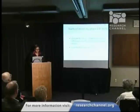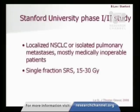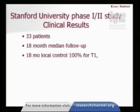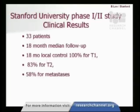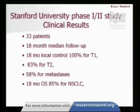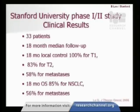We conducted a Phase 1-2 study looking at safety and efficacy in localized non-small cell lung cancers as well as tumors that had spread to the lung — mainly patients unable to undergo surgery. In our early days we used a breath holding technique. In this study of 33 patients with a median follow-up of a year and a half, we found that small tumors had 100% local control. Slightly larger tumors performed somewhat differently, and tumors that had spread to the lung from somewhere else had control rates of about 60%. Overall survival was about 85% for primary lung tumors, but only 56% for metastases as most of those patients succumbed to other metastatic lesions.